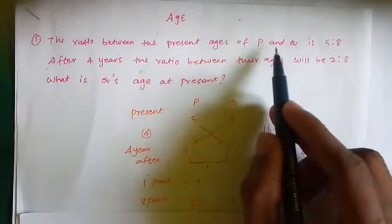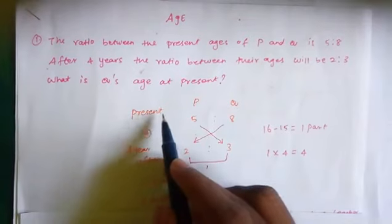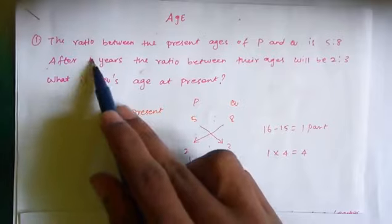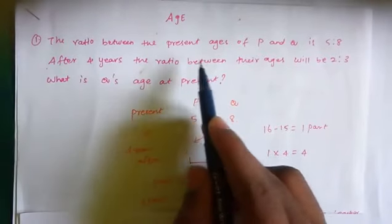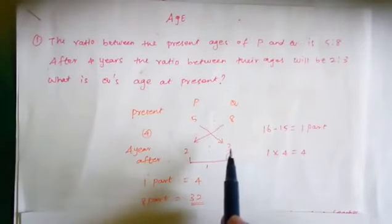Present age of P and Q is 5 is to 8. After 4 years, the ratio between them will be 2 is to 3. After 4 years, 2 is to 3.